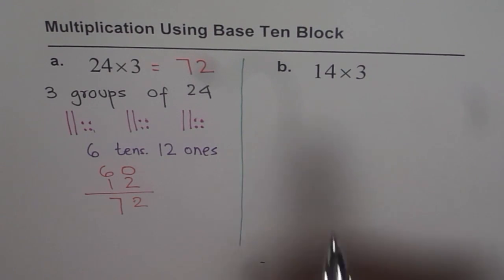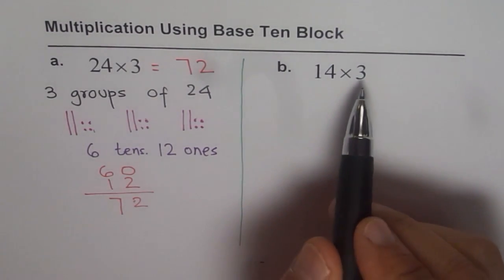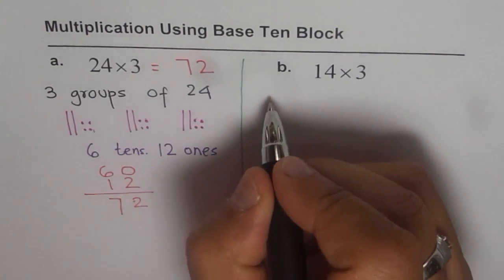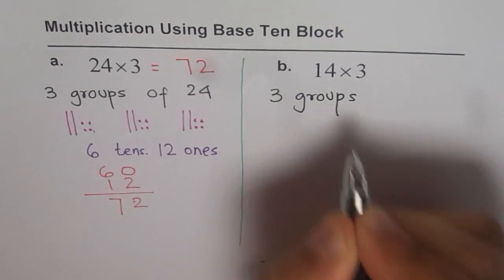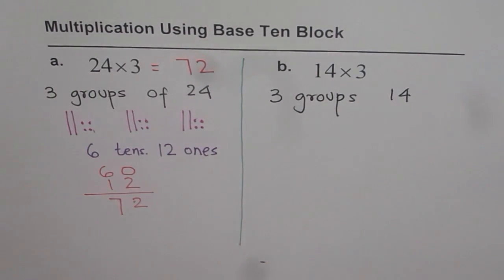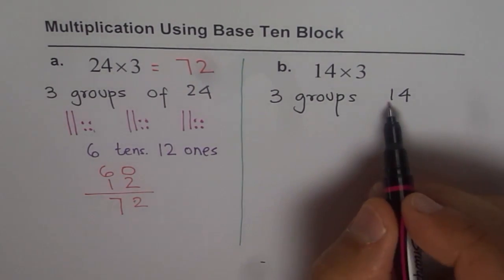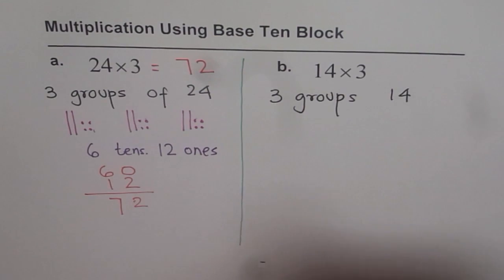First thing is to understand what is 14 times 3. It really means 14 groups of 3, or it could be 3 groups of 14, right? Now, how do you make 14 with base 10 blocks? It means 1 ten and 4 ones.